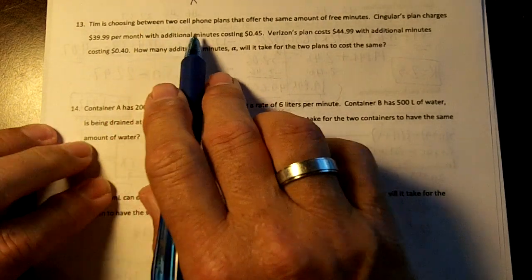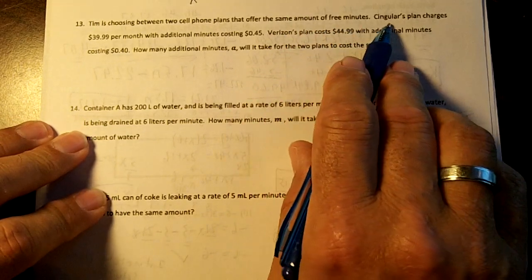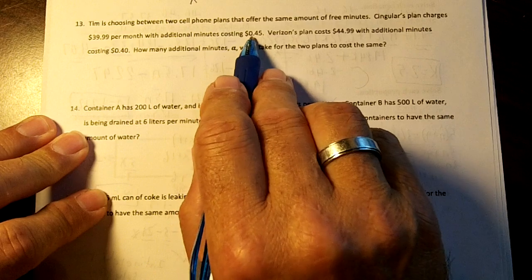Okay, Tim is choosing between two cell phone plans that have the same amount of free minutes. Senior plan charges $39.99 per month with additional minutes costing $0.45.